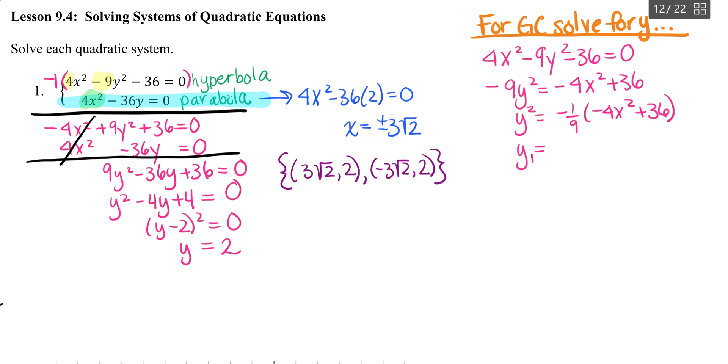When I take the square root, I get plus or minus. So I'm going to put my y1 as the positive square root of negative 1 ninth times the quantity negative 4x squared plus 36.